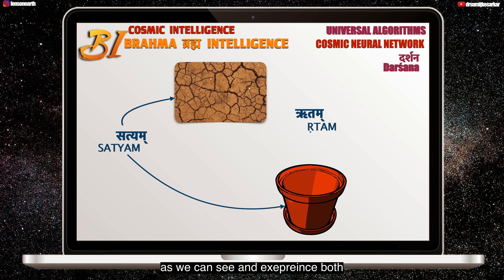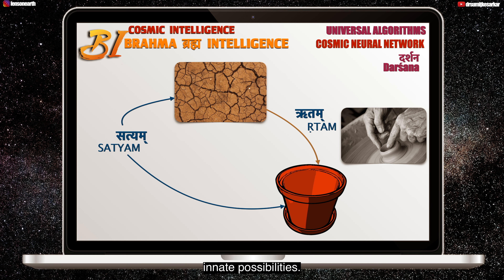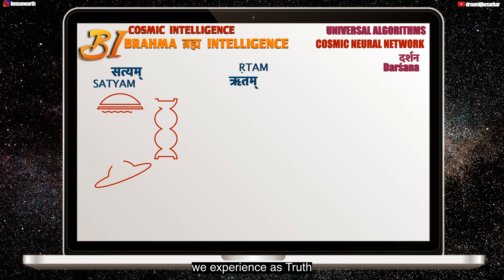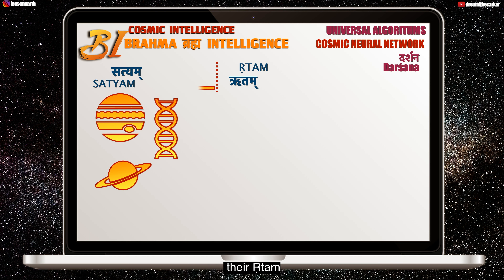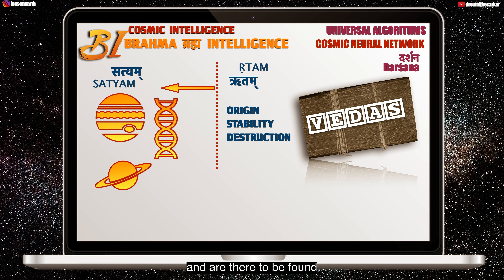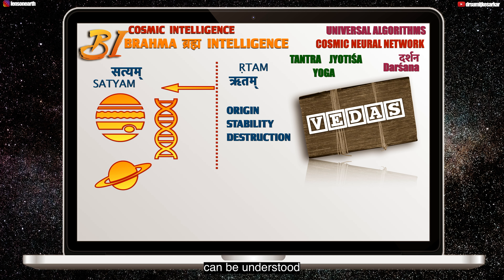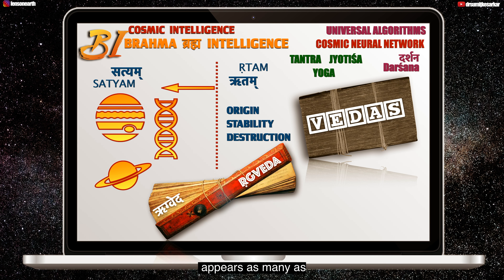Due to the way they programmed their neural networks based on algorithms of their philosophy called Darshan. Darshan are exponential algorithms through which we understand the immense possibilities of cosmic creations. I will try and make a separate video about Darshan, cosmic and artificial intelligence. Similarly, clay is empirically real or Satyam, and the pot which is a modification of clay is also empirically real or Satyam, as we can see and experience both. But the manner in which the clay was shaped to a pot is its Ritam — the universal law which when understood can project innate possibilities. So each manifestation in the cosmos we experience as truth or Satyam themselves reveal their Ritam, or the order in which they are created, destroyed or interact with each other. These universal rhythms of all cosmic interconnectedness, from micro to macro, zero to infinity, have already been put forth in the Vedas.